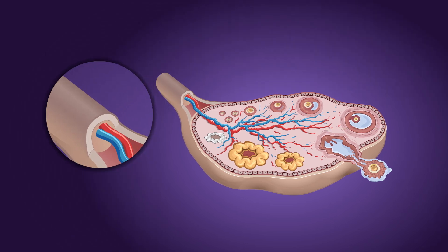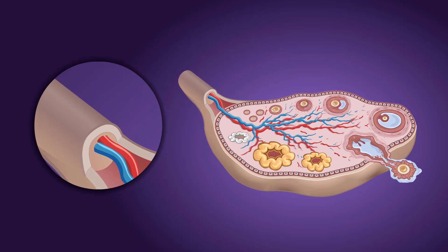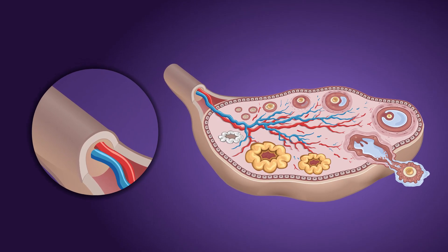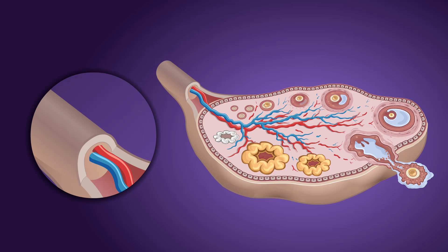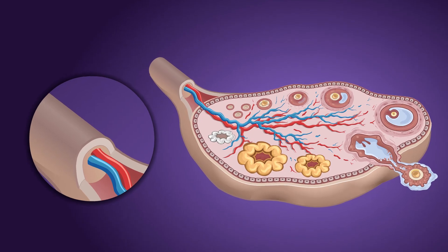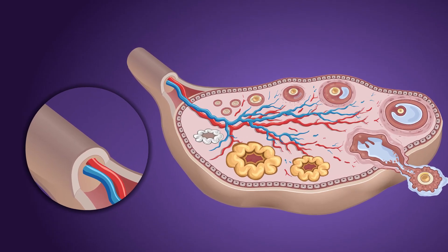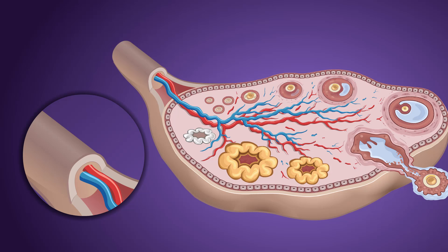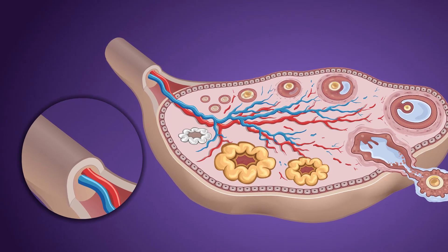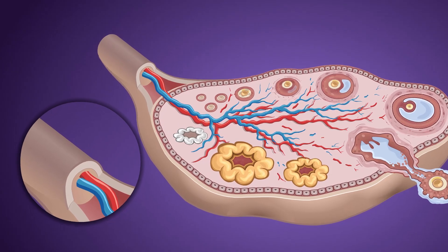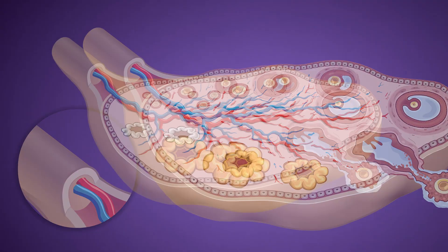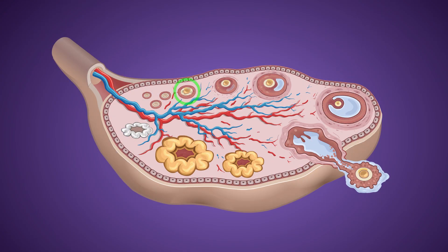The medulla basically contains all the blood vessels, nerves, and lymphatics of the ovary. The cortex consists of numerous ovarian follicles, which are spherical or oval bodies. The major functions of the mammalian ovary are the production of germ cells or oocytes.